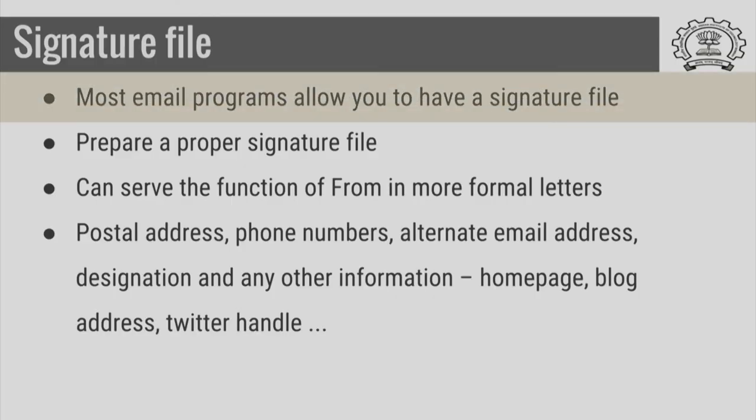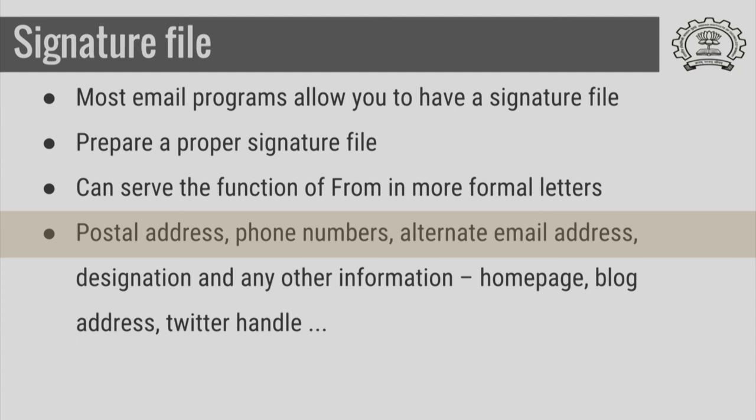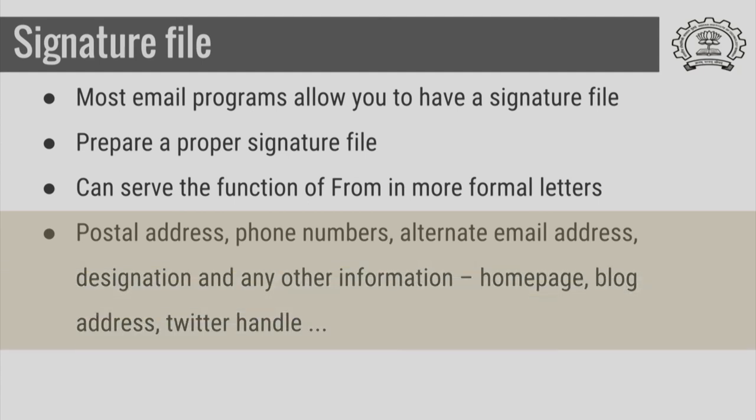Most email programs allow you to have a signature file, and you should prepare a proper one. The signature file serves the function of the 'from' section in more formal letters. It should include your postal address, phone numbers, alternate email addresses, your designation, and any other relevant information such as a link to your home page, blog address, or Twitter handle. The signature file should contain all information so that if somebody decides to communicate with you by means other than email — by calling, faxing, or sending a letter — that information is readily available.